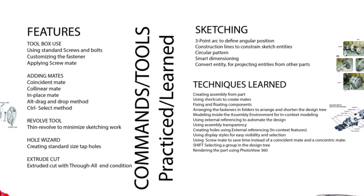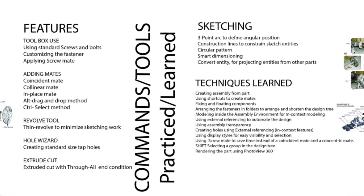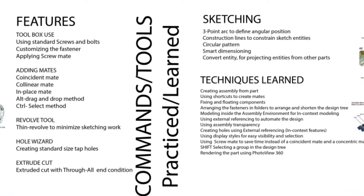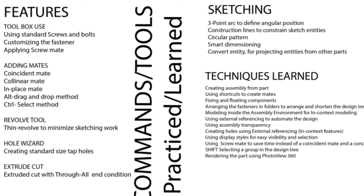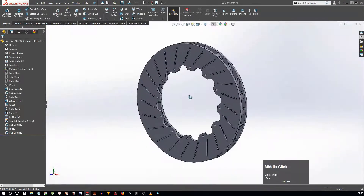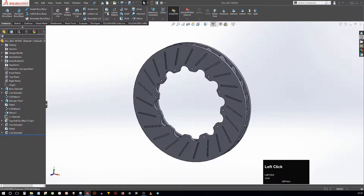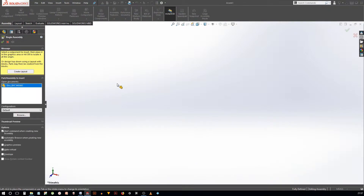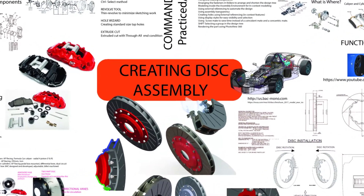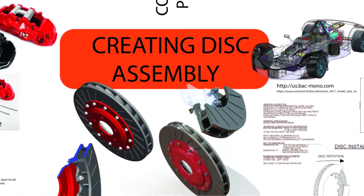Since we do not know the precise dimensions of the hub, let's start with modeling it in the assembly environment. This will tell us how it will look like with reference to the disc. Open the disc part you made in lesson 3 and create an assembly document from it. If you do not have the source file, you can get it from the course page on Udemy or from our Patreon page. The mind map, however, can be accessed using the link in the description.